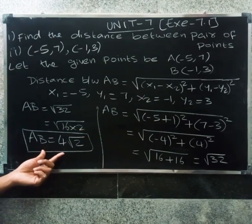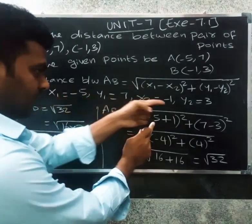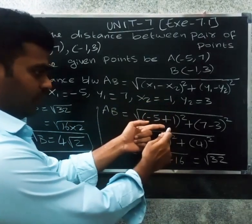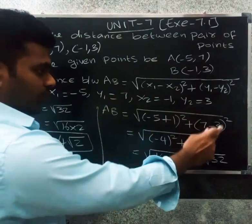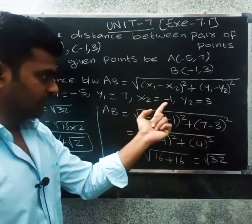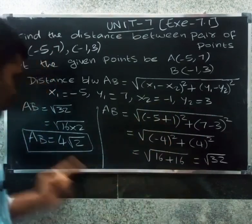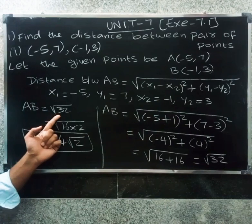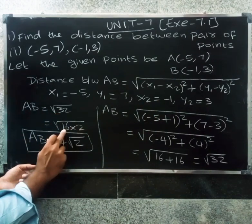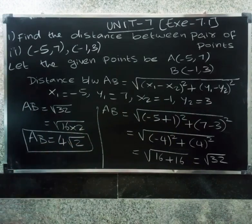An important note: when computing x1 minus x2, be careful with signs — minus into minus gives plus. Here √32 simplifies as 16 × 2, and the square root of 16 is 4, so the result is 4√2.